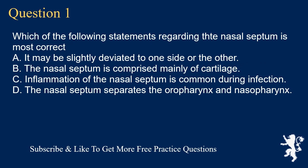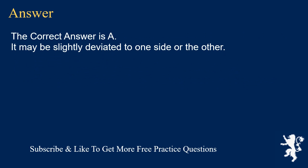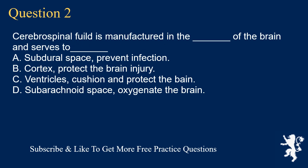Question 1. Which of the following statements regarding the nasal septum is most correct? A. It may be slightly deviated to one side or the other. B. The nasal septum is comprised mainly of cartilage. C. Inflammation of the nasal septum is common during infection. D. The nasal septum separates the oropharynx and nasopharynx. The correct answer is A. It may be slightly deviated to one side or the other.